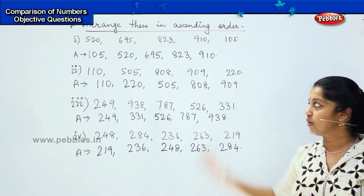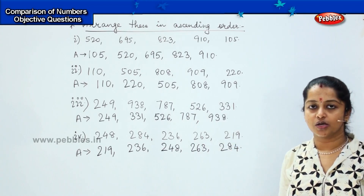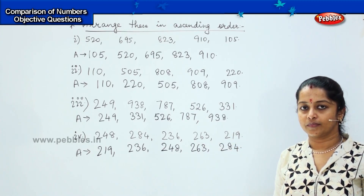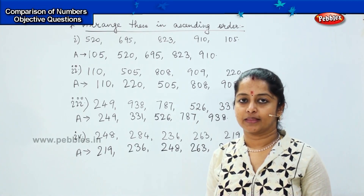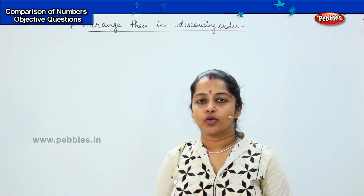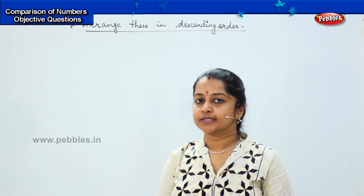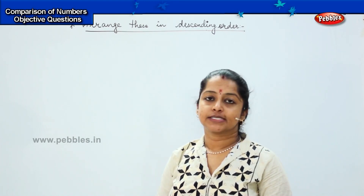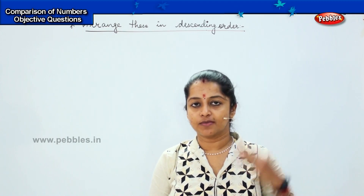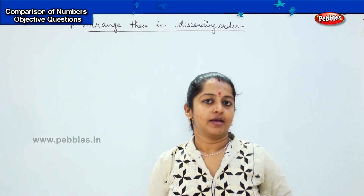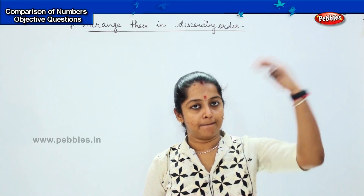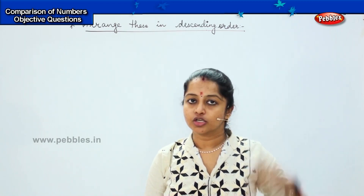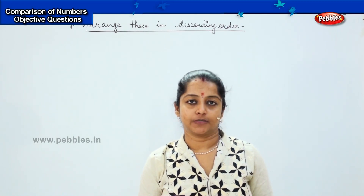Got it, children? Are you clear with the ascending order? So shall we do some more questions? The next topic we are going to start is arranging numbers in descending order. We have done ascending order which is from small to big. Now we are going to do descending order, which is from big to small — the reverse direction.